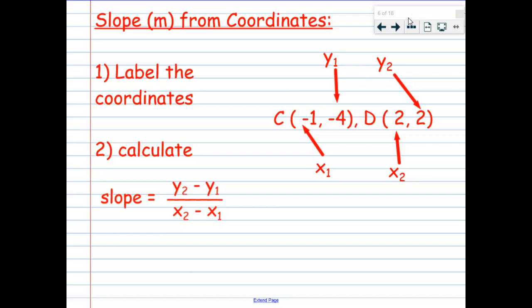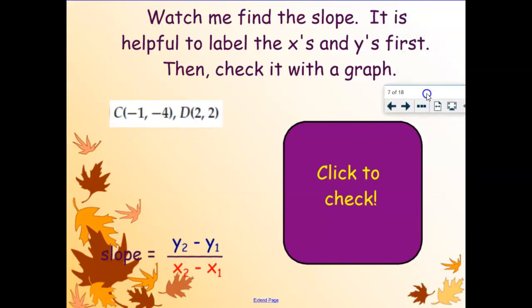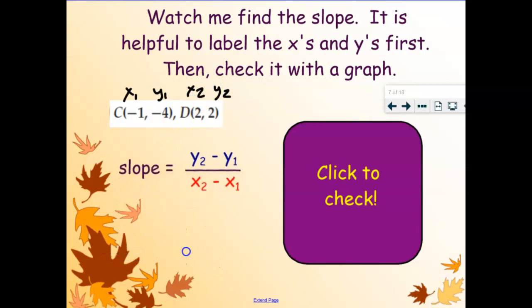All right. So our steps for using the slope formula are to label the coordinates. So x1, y1, x2, y2. And then we just plug and chug. So here's our formula. We're going to pop our numbers in there and we're just going to chug our way on through it. So let me show you how that works. All right. So step one again is to label our x's and y's. So this is my x1, y1, x2, y2.